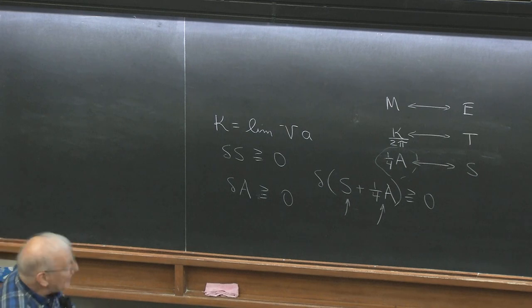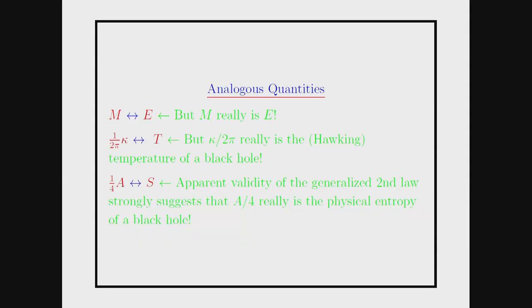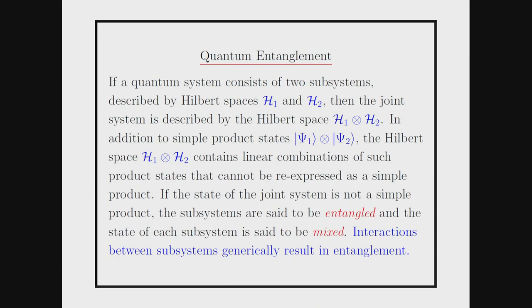So: if you take the entropy of matter outside black holes and add one quarter times the black hole area, you get a quantity that as far as one can tell never decreases. The interpretation is that this must be the entropy of the black hole — the second law of thermodynamics applied to the entire system. That's enough for me to erase the dotted line and conclude that there's not only a perfect mathematical analogy, but the laws of black hole mechanics really are the laws of thermodynamics applied to black holes.